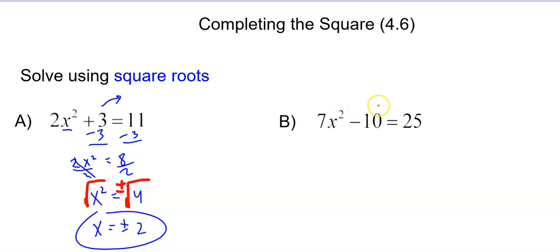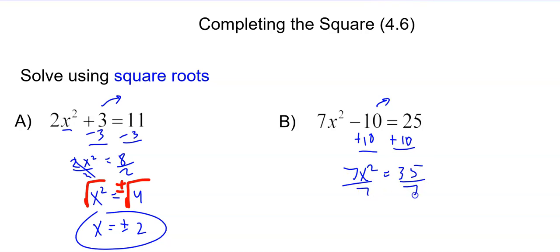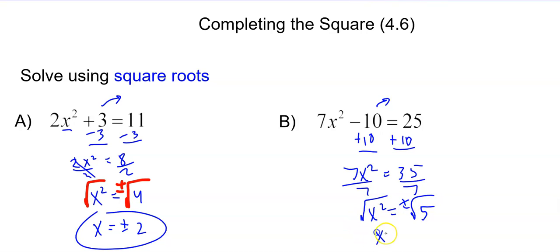Same thing here. You want to isolate that, so add 10 to both sides. We get 7x squared equals 35, divide by 7, get x squared equals 5. This is a little different because it's not a nice perfect square. Take the square root of both sides — don't forget plus or minus — you get x equals plus or minus the square root of 5. And that doesn't really simplify.